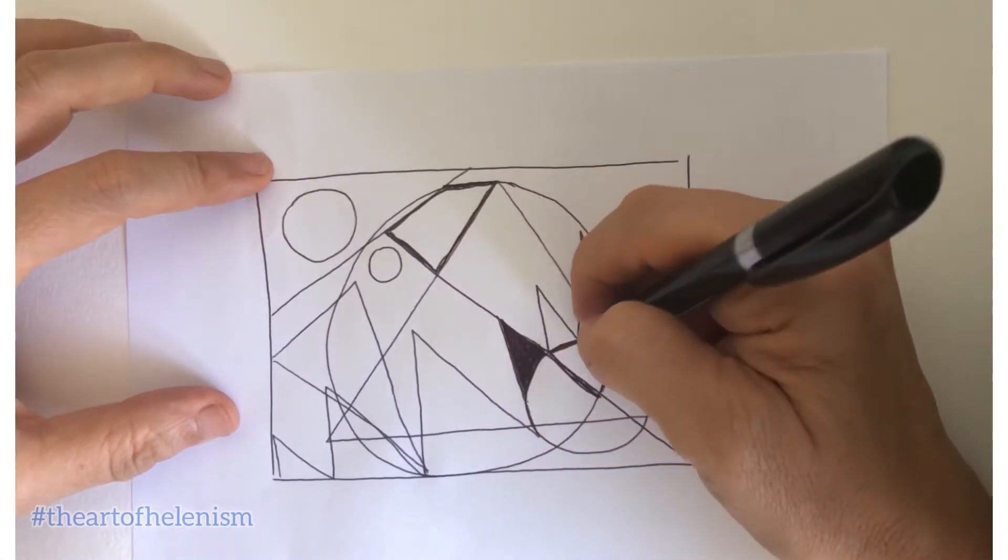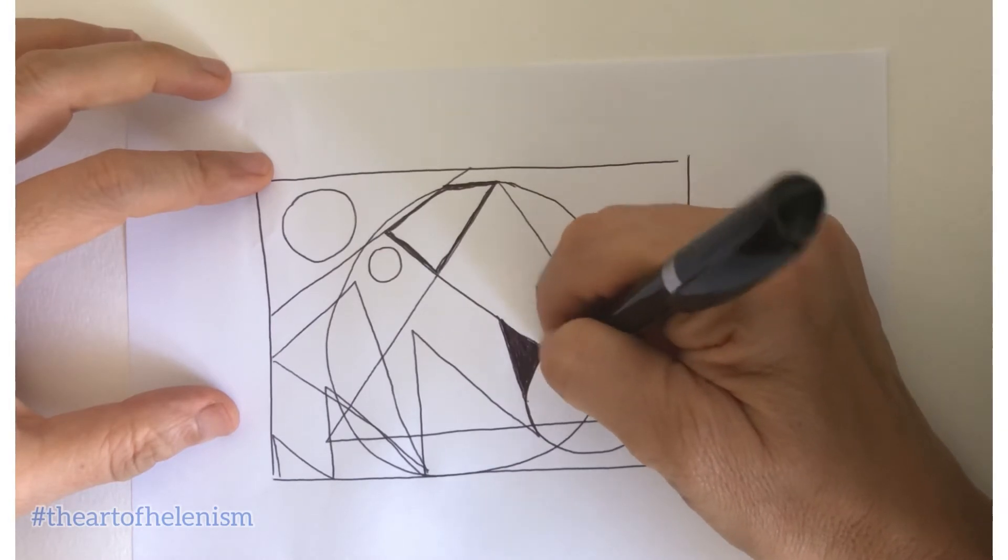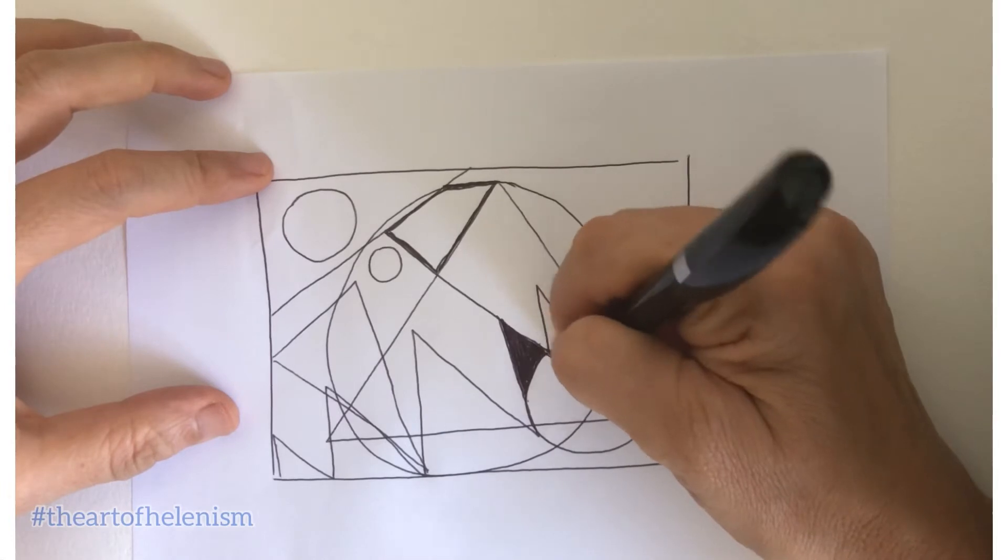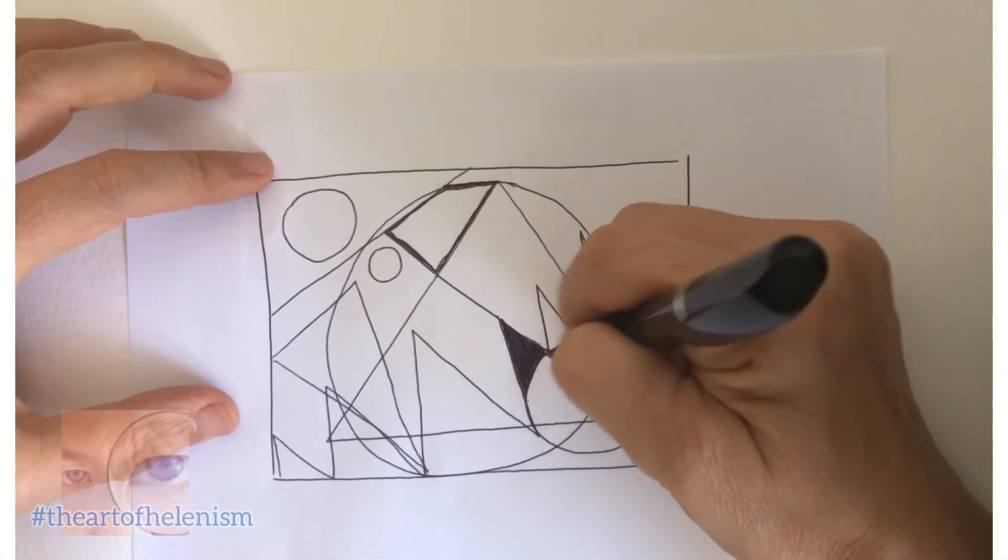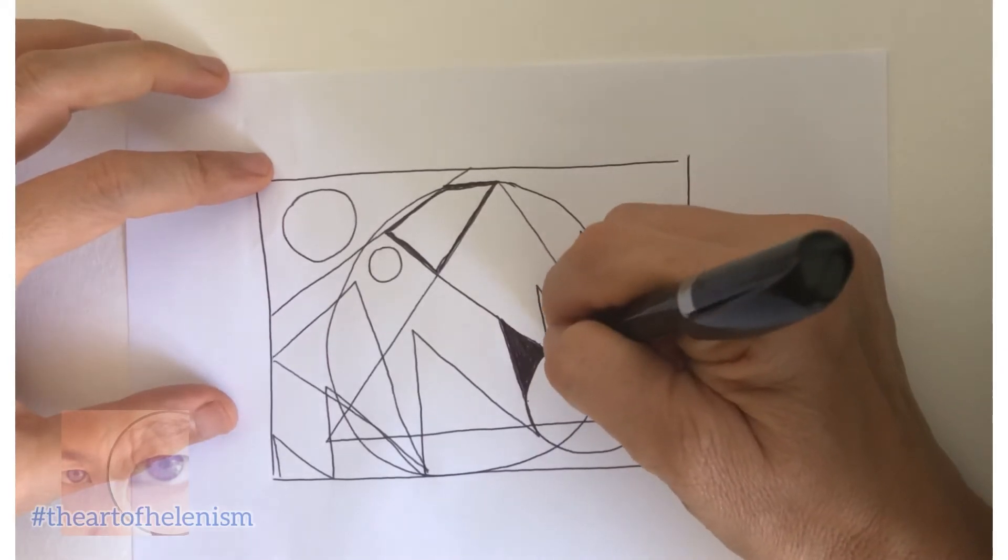Now drawing into the shape. A dark shape. Blacken it out. Darken it. So it stands out from the rest.